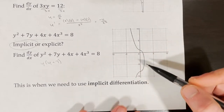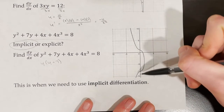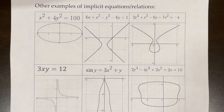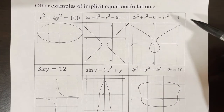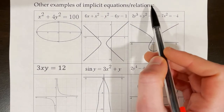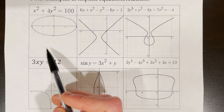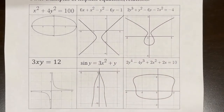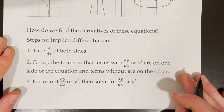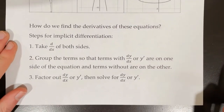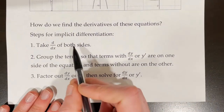This is what the graph of that equation looks like — it's actually not a function, it's a relation because it doesn't pass the vertical line test. This is a situation where we need to use implicit differentiation. Here are some other examples of implicit equations or relations. Note that I did not say implicit functions, because a lot of these don't pass the vertical line test. We have a variety of shapes — an ellipse, a hyperbola — all of these are implicit equations. So how do we find the derivatives of these equations that are defined implicitly? We need to do what's called implicit differentiation.